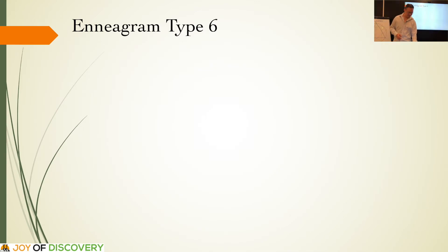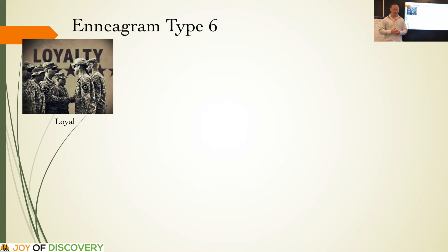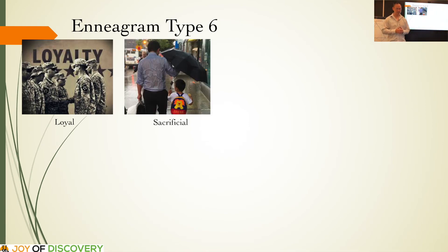Enneagram Type 6. Sixes are loyal people — loyal to their family, friends, and country. When a six gives you their word, you can count on them to keep it. They take their word seriously and can honour their pledges and commitments. If required, they may very well join the army and give their lives for their country. Sixes are willing to sacrifice themselves for others — just as a man who doesn't mind getting all wet so his young son can stay dry. They will go out of their way for someone they believe in and don't mind going down with the ship for that person.